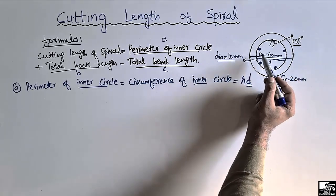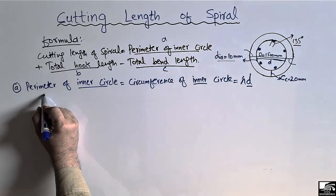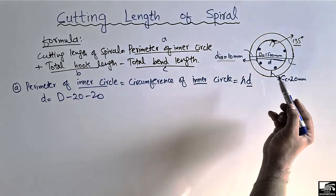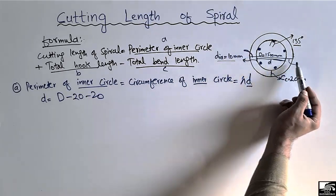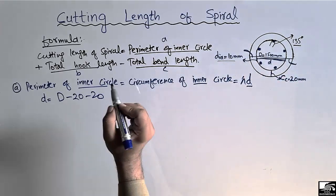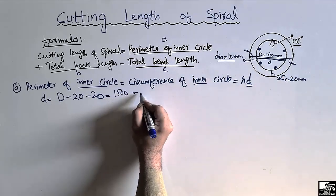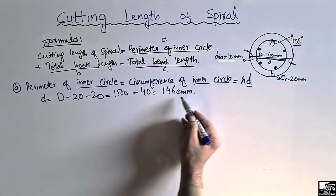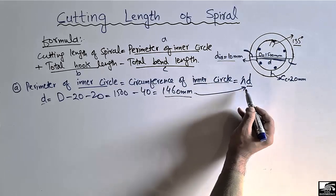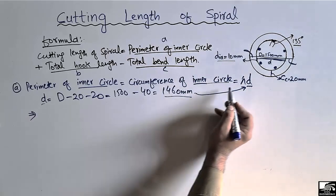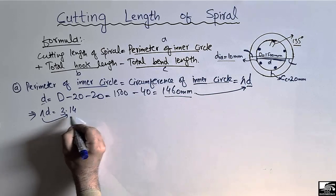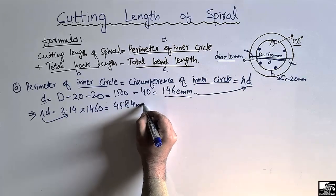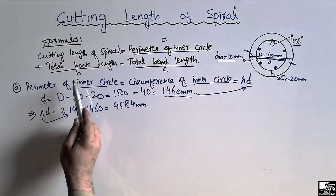We calculate the inner diameter (small d) by subtracting the concrete cover on both sides from the overall diameter. So d = 1500 − 20 − 20 = 1460 millimeters. This is the diameter of the inner circle. Putting this into the circumference formula: π × d = 3.14 × 1460 = 4584 millimeters. This completes the first unknown, A.